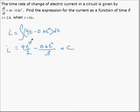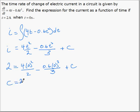If t is 0, both terms go to 0. Let's substitute: we get 2 equals 4 times 0 squared over 2 minus 0.6 times 0 cubed over 3 plus c. In which case, c equals 2.